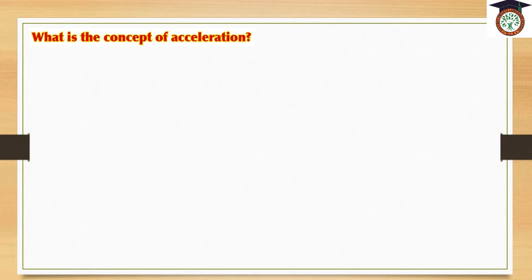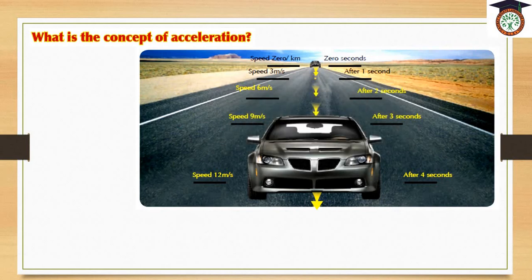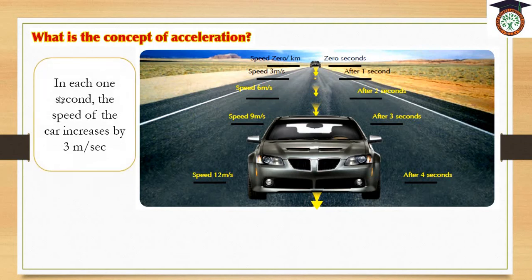What is the concept of acceleration? As we see here, a car starts motion from rest — its speed equals zero. Then, the speed of the car increases to reach 3 meters per second after one second, then 6 meters per second after another second, then 9 meters per second in the third second, and increases to reach 12 meters per second after the fourth second. So, the speed of the car increases as time passes — the car accelerates. In each one second, the speed of the car increases by 3 meters per second.